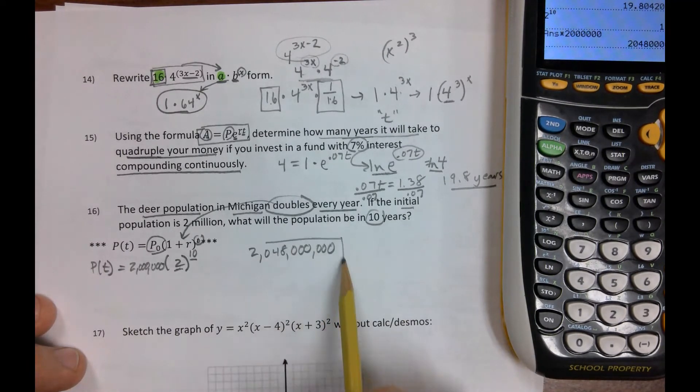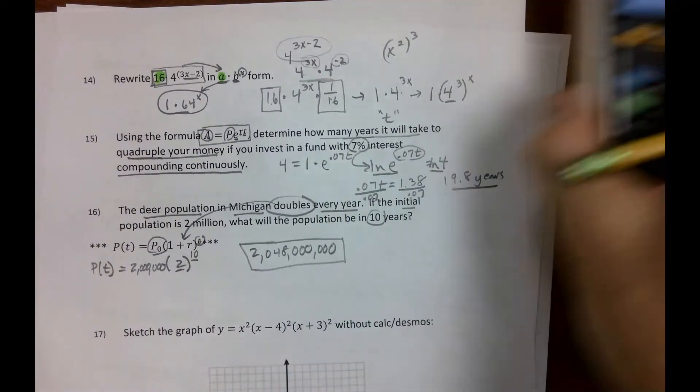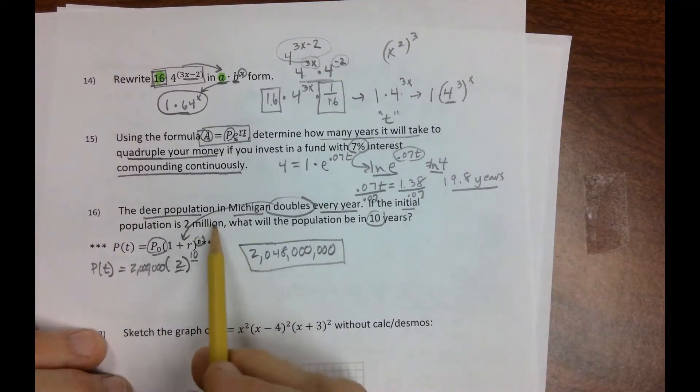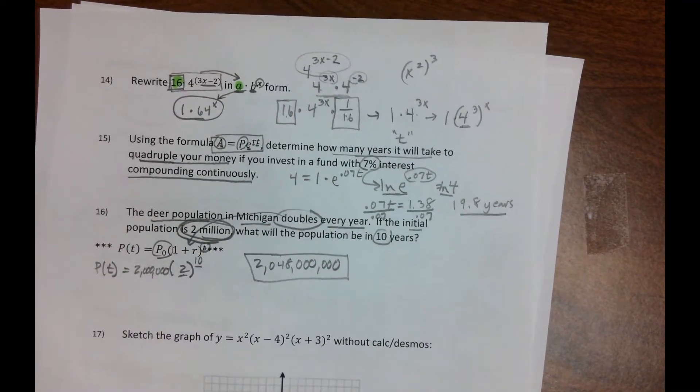2,048,000,000 deer. That's a ridiculous math problem, but deer hunters would be thrilled. But the deer population in Michigan is 2 million. I did look that up. But obviously, the deer population doesn't double every year.